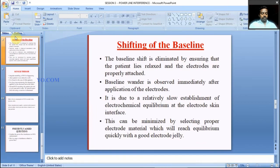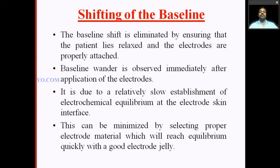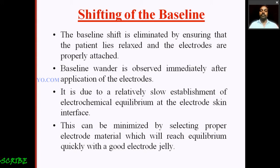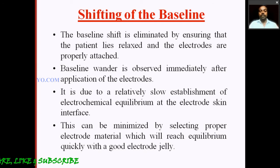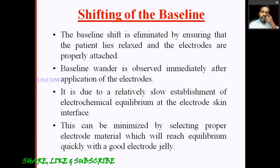Shifting of the baseline is another interference. The baseline shift is eliminated by ensuring the patient lies relaxed and that electrodes are properly attached. If the patient is not relaxed, the heartbeat is affected and we cannot measure the correct performance of the heart. So the patient must be in a calm and relaxed state. Electrodes must be properly attached.